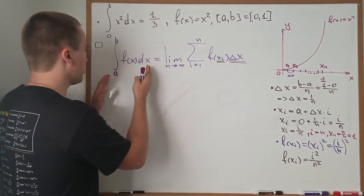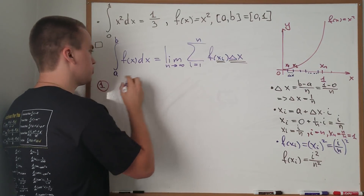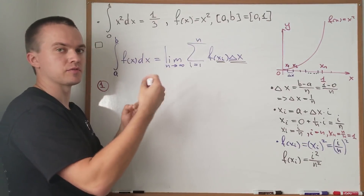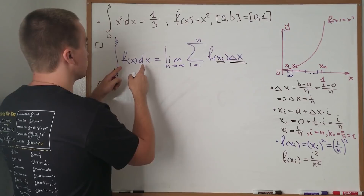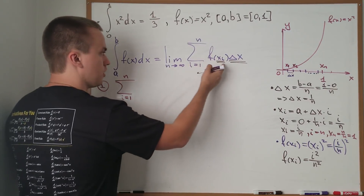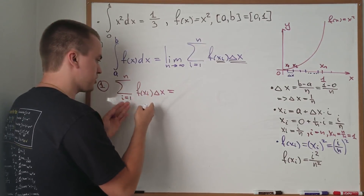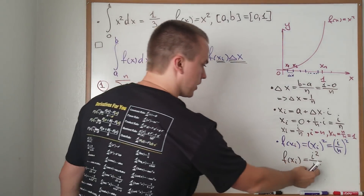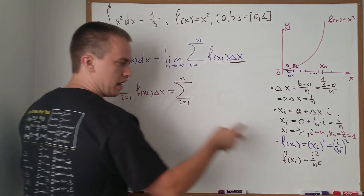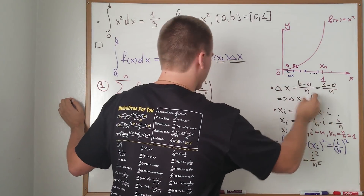To calculate this integral, I want to divide the computation into two steps. In Step 1, I'll evaluate the sum separately without the limit. Then in Step 2, I'll take the limit of that value as n goes to infinity and get 1/3. For Step 1, let's find the sum from i equals 1 to n. We plug in f(xᵢ) = i²/n² and Δx = 1/n, giving us the sum of (i²/n²)·(1/n) = i²/n³.